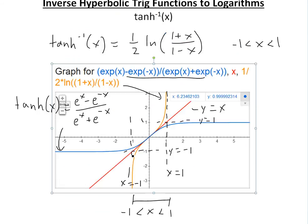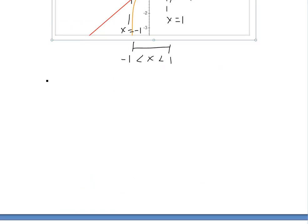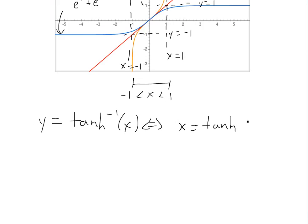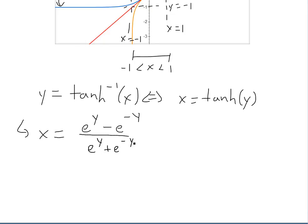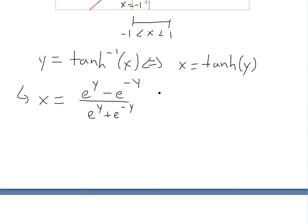Now that we have the domain, we can convert the function to a logarithm. We let y equal inverse hyperbolic tan of x, which is the same as writing x equals hyperbolic tan of y — that's all inverse functions are, you switch the x and y. Now we write this using the definition: x equals (e to the y minus e to the negative y) divided by (e to the y plus e to the negative y).